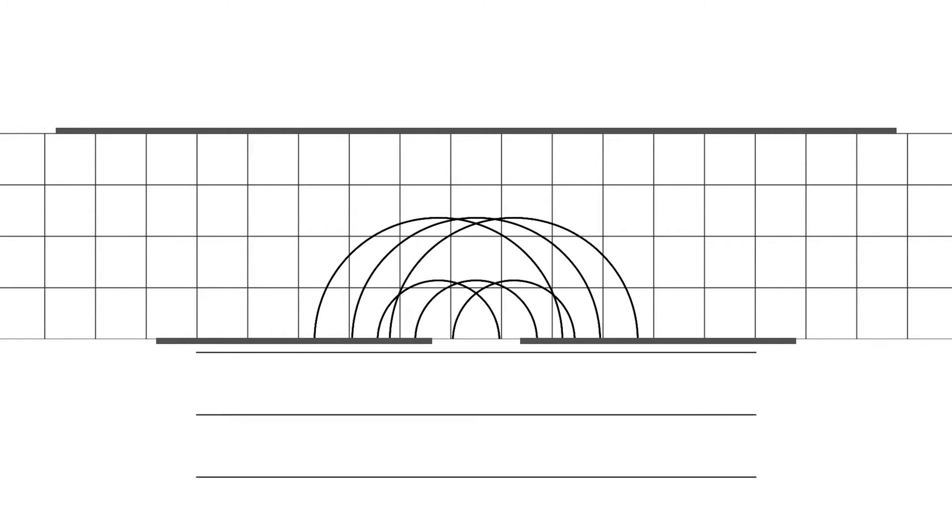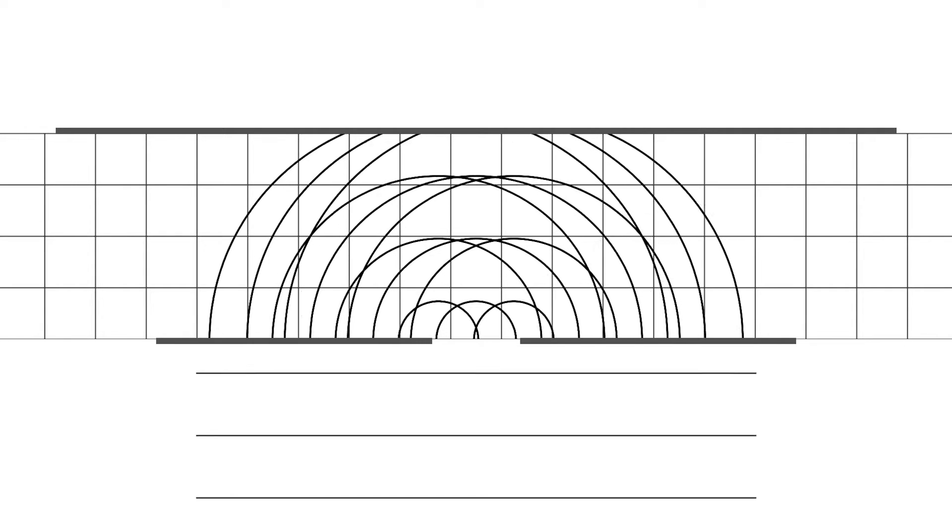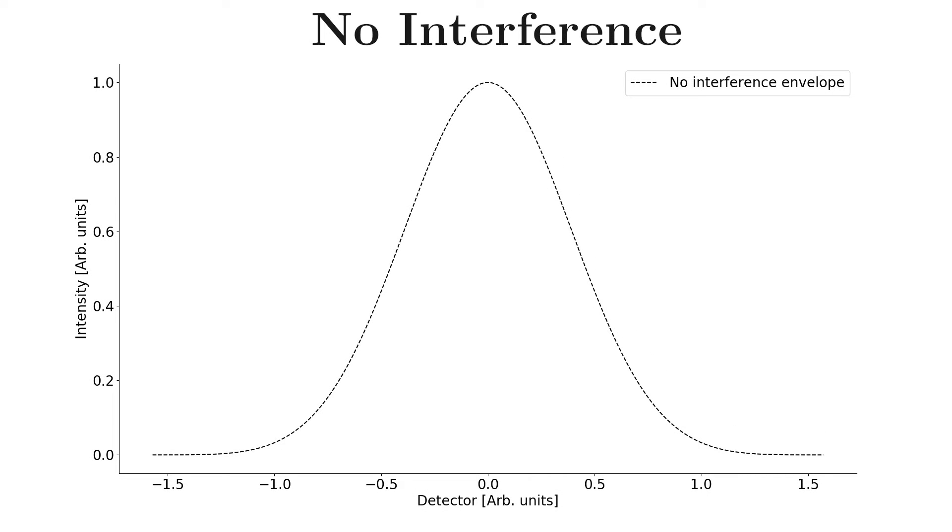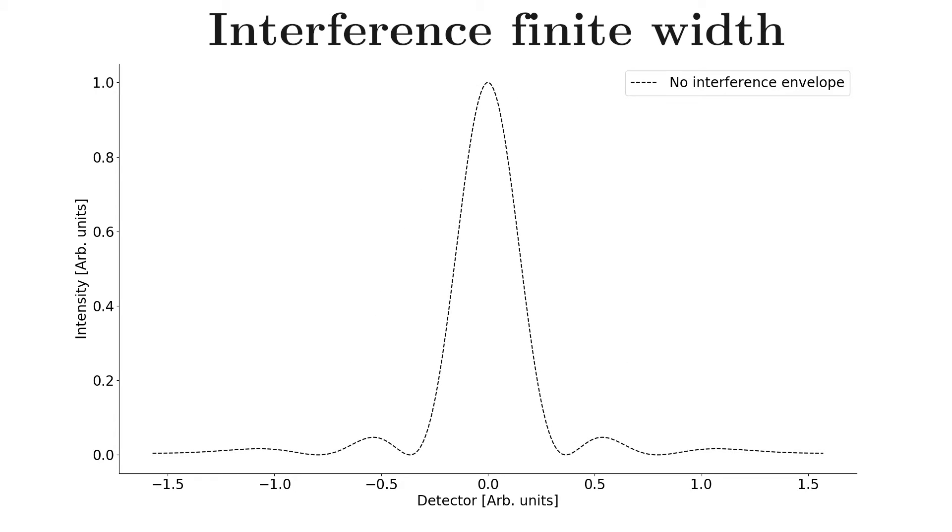If the width of the slit was bigger, this signal could also interfere with itself. We will see constructive interference where the circles overlap, because they represent the top of the wave. And so the detector would not read this simple signal from before. We would instead see something complex, like this interference pattern here.